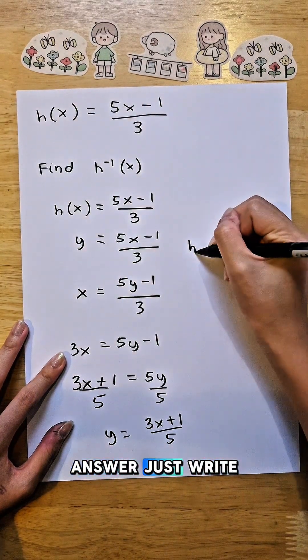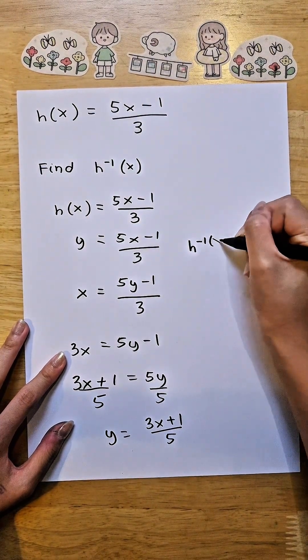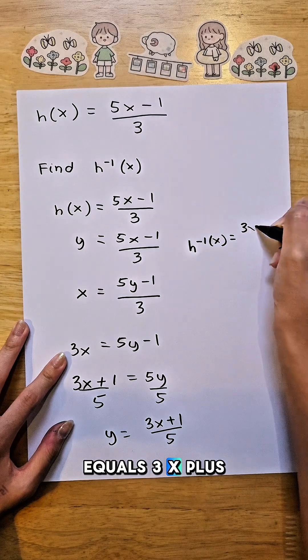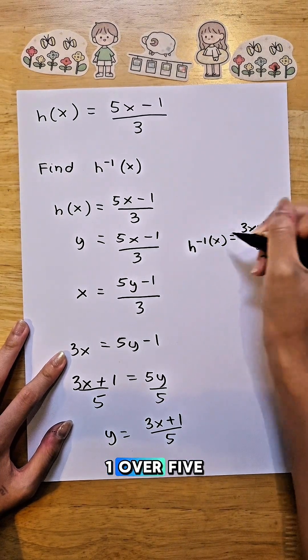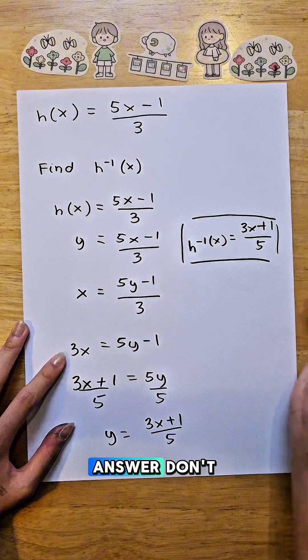And that's your answer. Just write it down again: h⁻¹(x) = (3x + 1)/5. That is your answer.